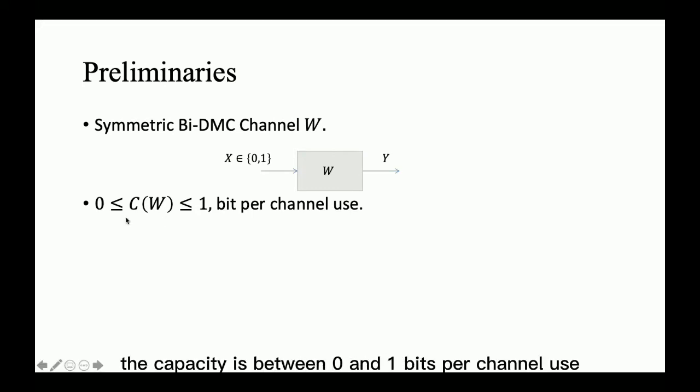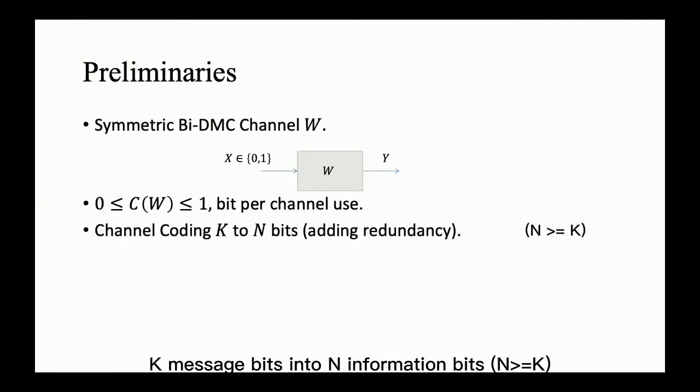For a BI-DMC, the capacity is between 0 and 1 bits per channel use. The channel coding problem is to map K message bits into N information bits, and those added parity bits could help us to detect or correct some of the errors imposed by the noisy channel.